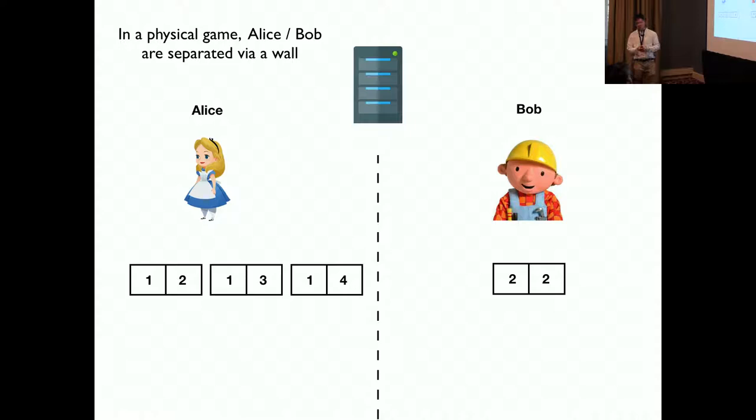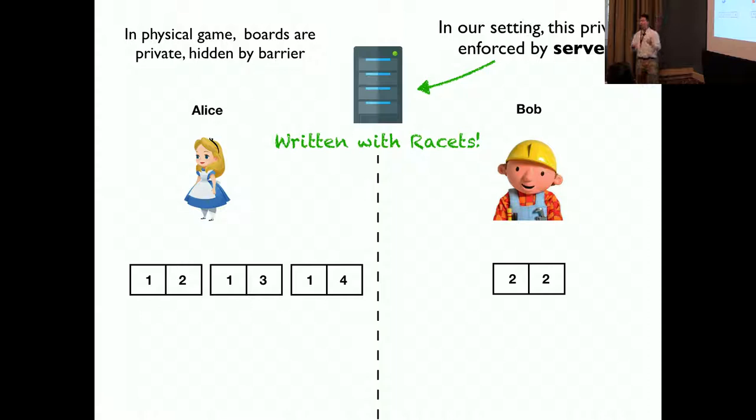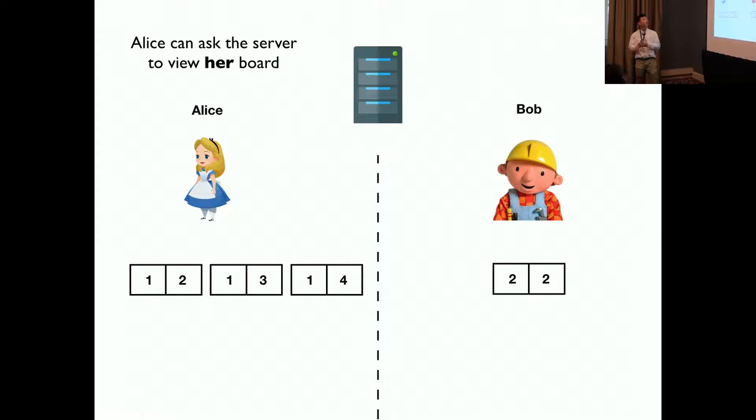In a physical game, Alice or Bob are separated by a wall. The wall is the barrier that keeps Alice or Bob from seeing each other's board. In our setting, this privacy is enforced by a web server written in RACIS.